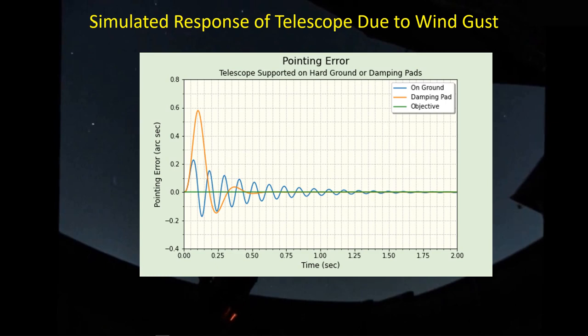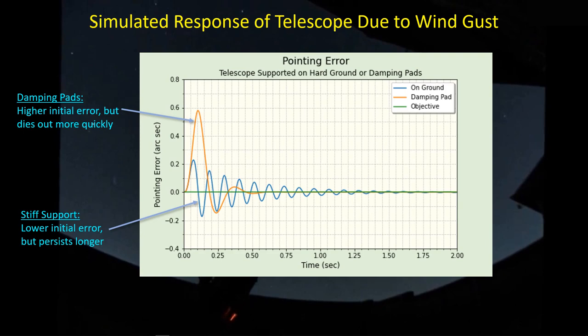If you do that, you will get a quicker die-out of the response. However, because you've undercut the stiffness of the system, when the wind gust happens, the telescope leans over much farther. When it comes back, yes, it does die out much quicker, but we have to live with this higher excursion. With a stiff system, no damping pads, we have a lower initial error, but that error persists for a longer period of time. When we put in damping pads, we get a higher initial error because we've also undercut the stiffness. But because we've increased the damping coefficient, that excursion dies out very quickly. Let's keep in mind we're talking about pointing error, which should relate back to arc seconds and the resolution of the imaging system we're using.